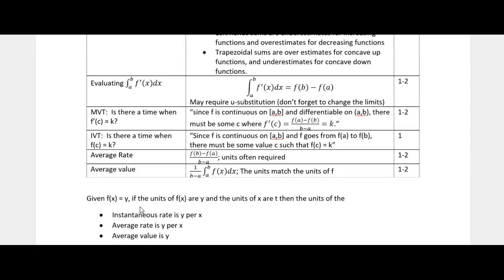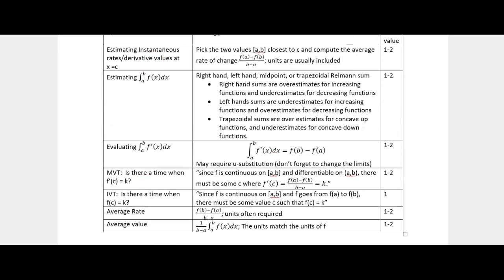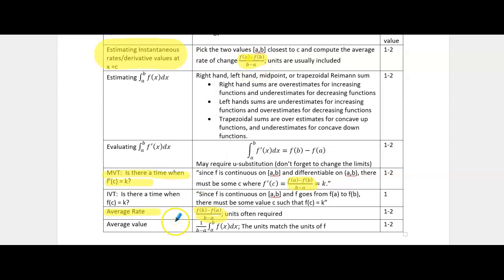So let's highlight the subtle differences. Estimating instantaneous rates and finding average rates both use the formula (f(b) - f(a)) / (b - a). For instantaneous rates, you pick the two values closest to the point of interest. For average rates, the endpoints are given to you. For MVT, the endpoints are also given, but you must include the written justification about continuity and differentiability.